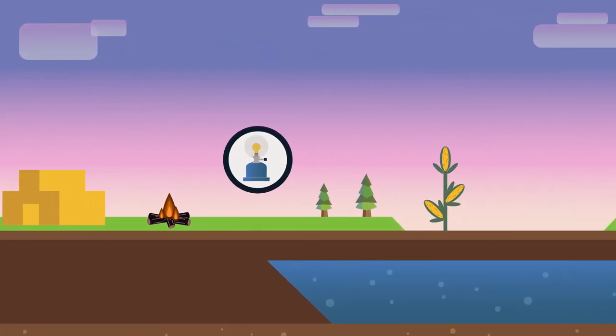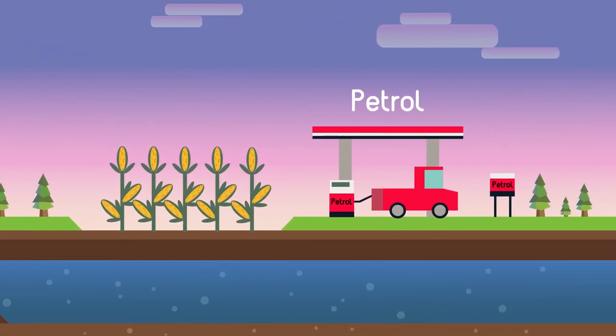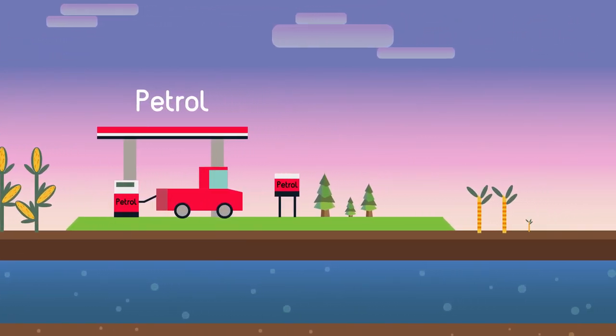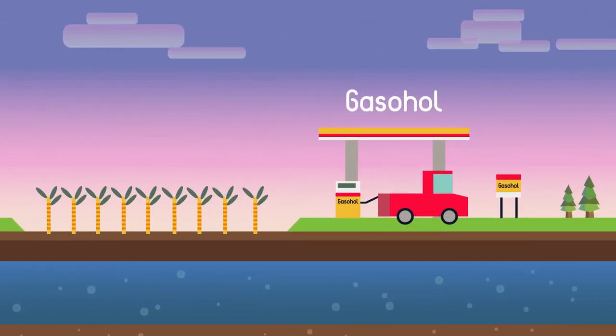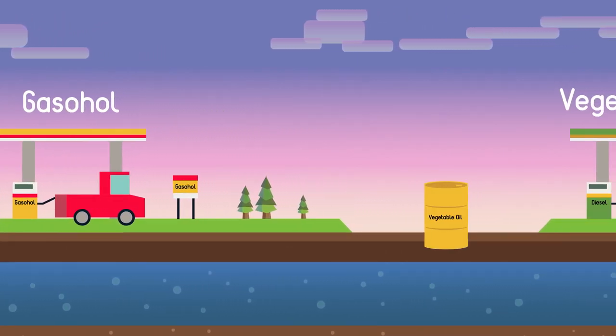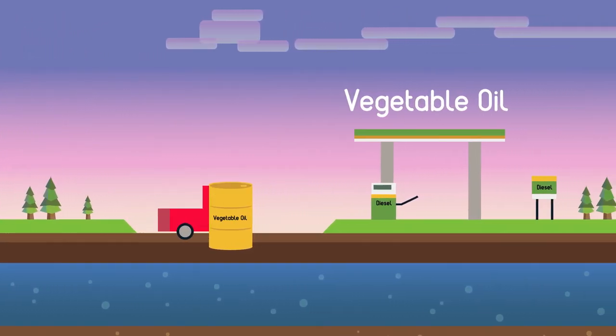But nowadays we are growing crops specially to use as a fuel. In Brazil, sugar from sugarcane is fermented to make alcohol, or gasohol, to fuel their cars. In Europe and USA, vegetable oil is made into fuel for diesel engines.